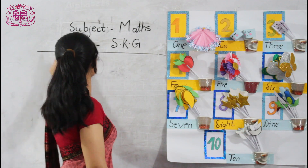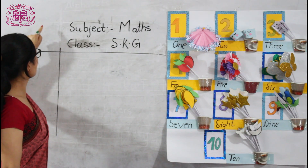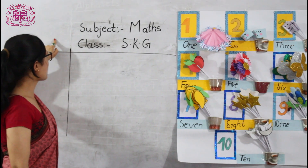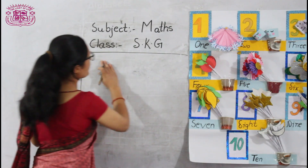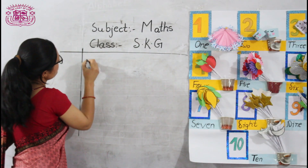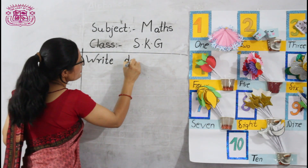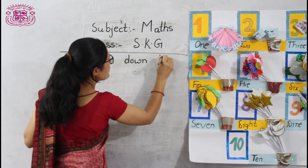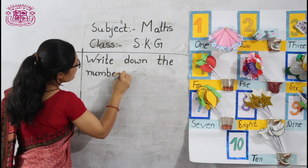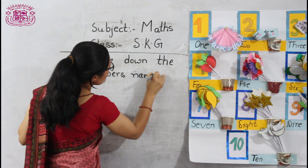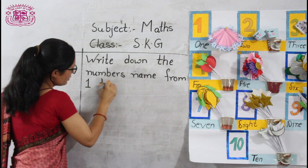Look at the whiteboard. Here is your copy. Here is the top left corner. Here you should write homework or classwork. And from here you should write the topic. I am going to write the topic: from 1 to 10.